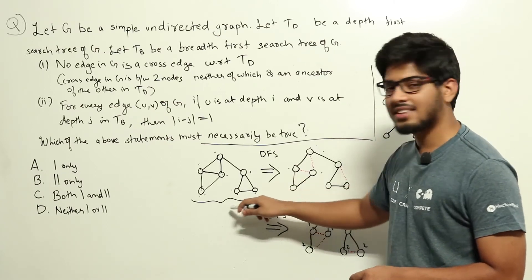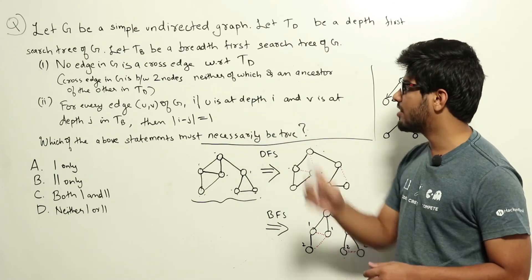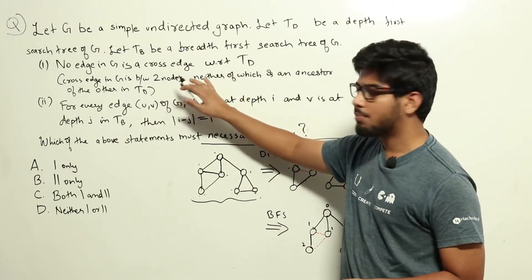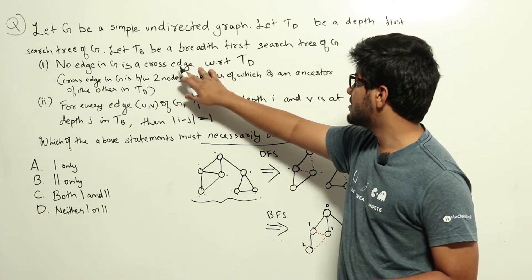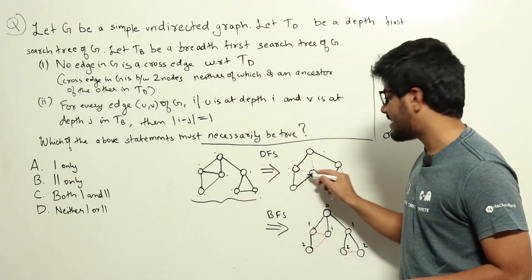So in this example we have chosen there are no cross edges. But we can't use it to say that this will always be true. But one property of constructing a DFS tree is that suppose this is actually a cross node. Imagine this was a cross node in G. But when we are constructing the graph...